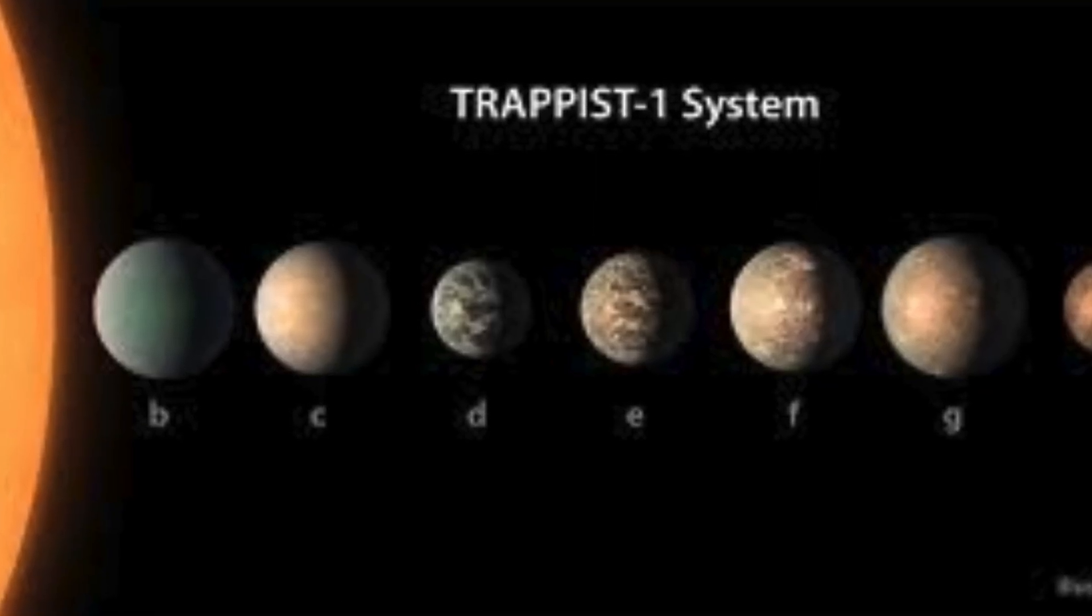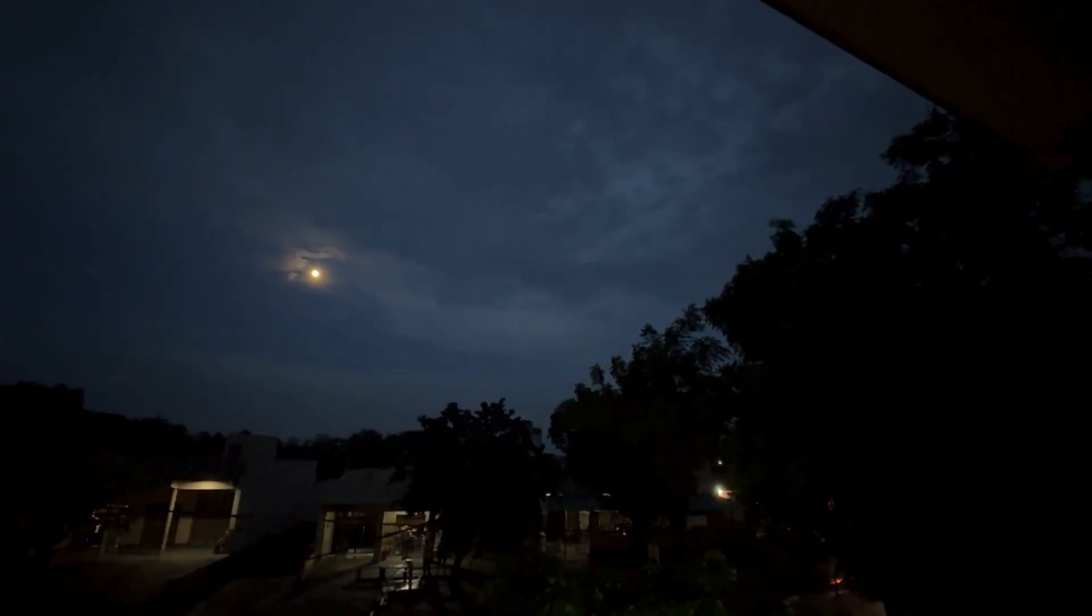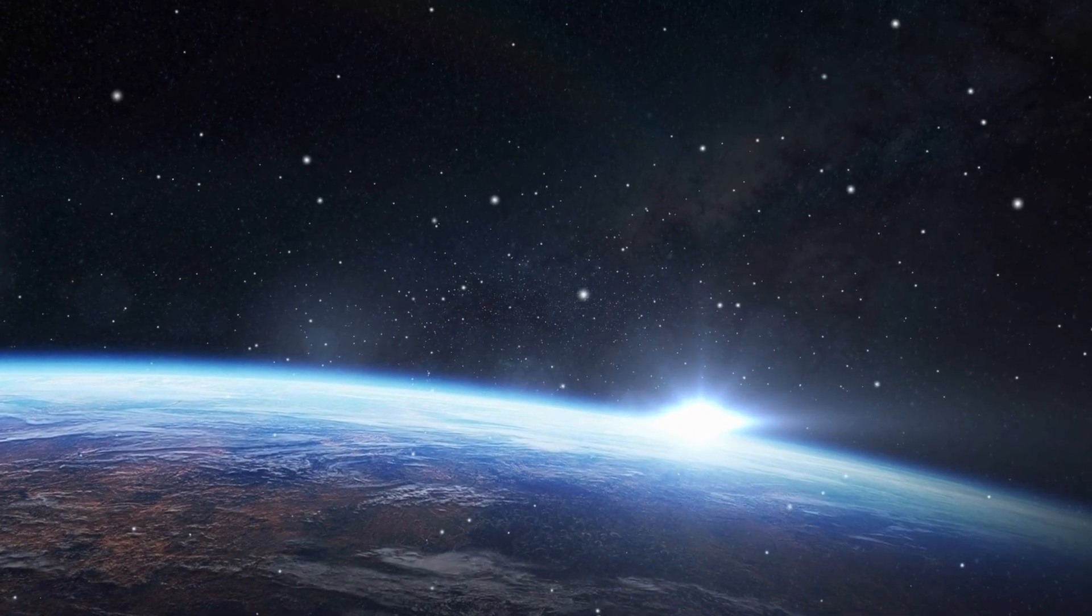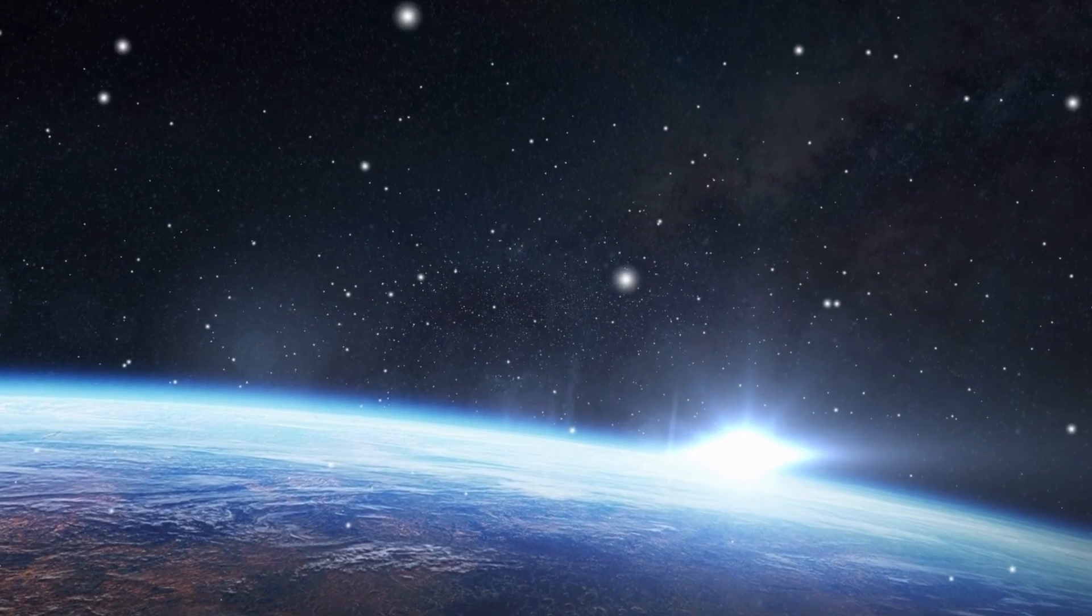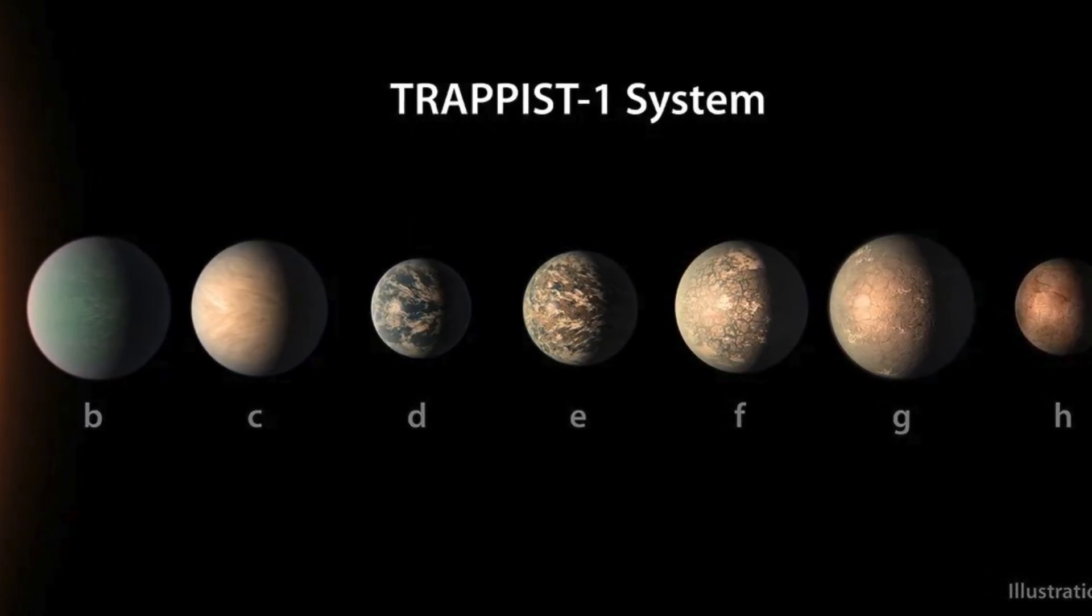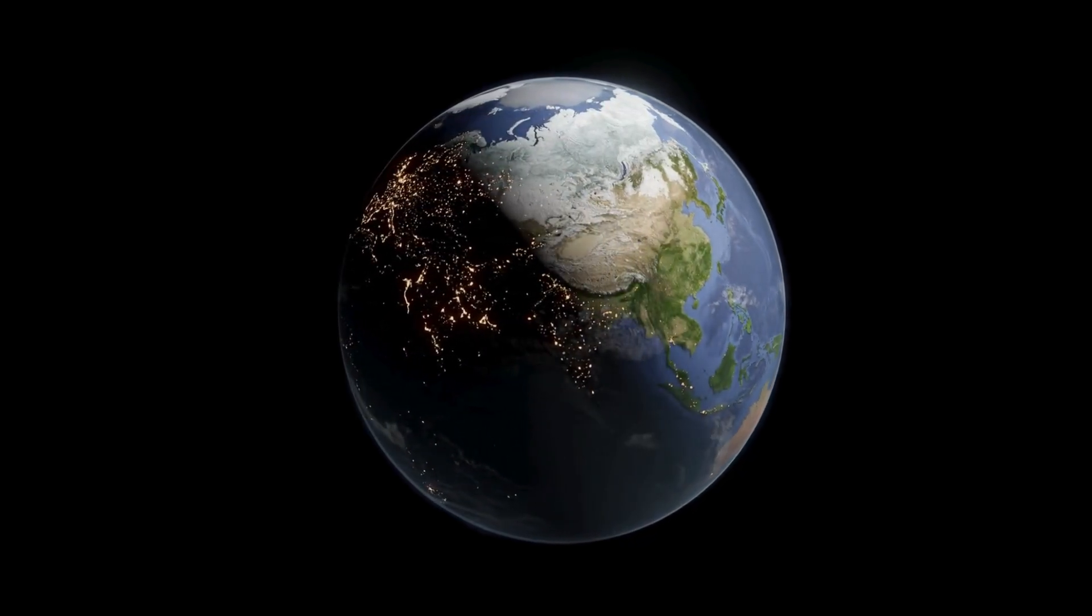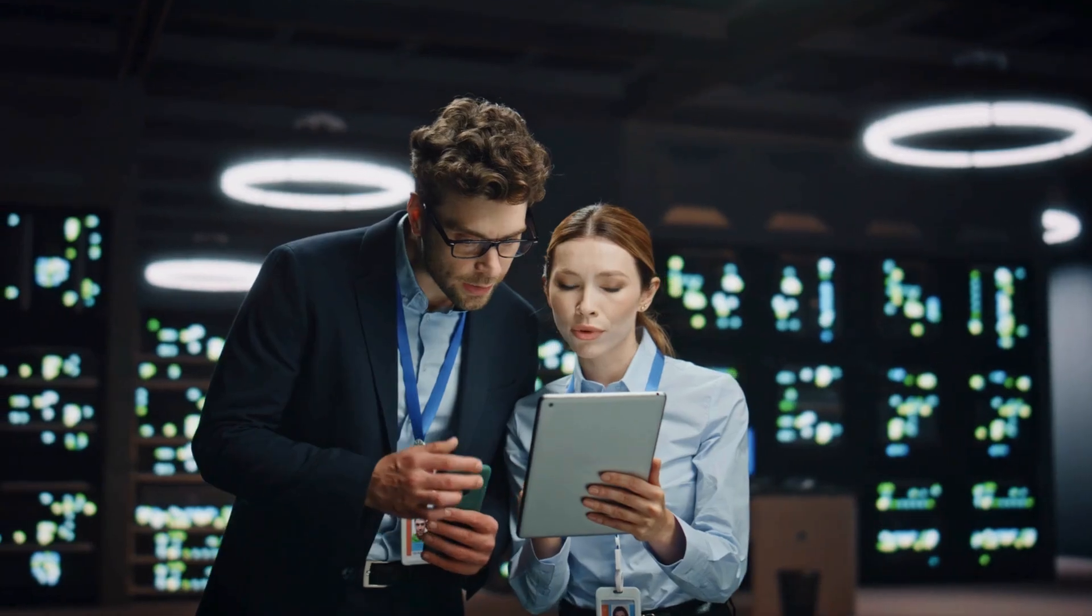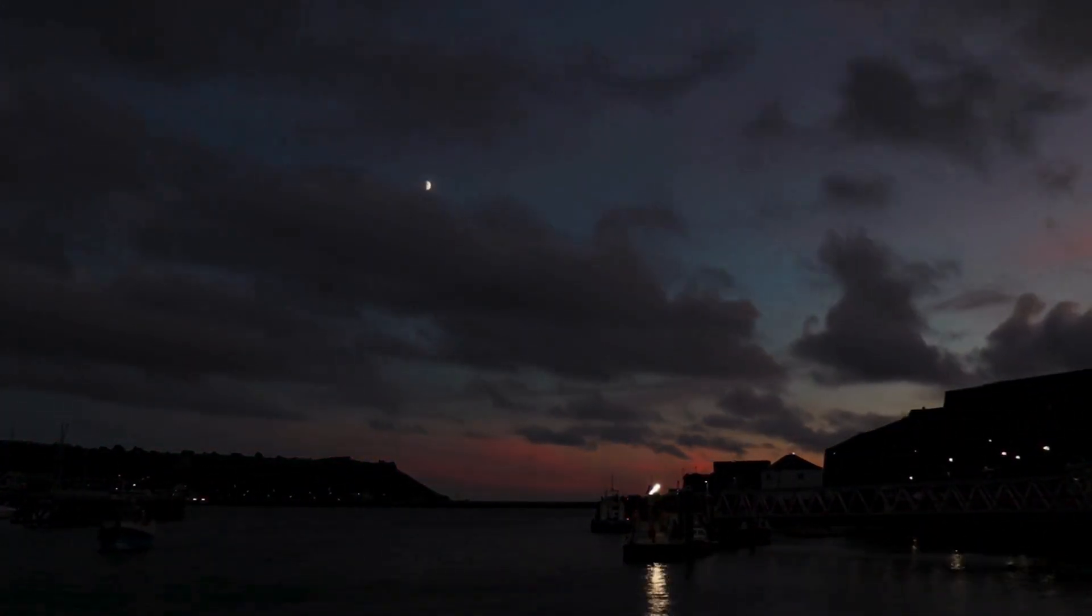It's been particularly effective for TRAPPIST-1. The data is 10 times more sensitive than for any other system. Why? Counter-intuitively, because the star is dim. A planet blocks a larger relative fraction of light from a small star than a bright one, making the signal easier to measure. Using these measurements, the team has already ruled out atmospheres for TRAPPIST-1c and d. But results from TRAPPIST-1e, a rocky planet about 0.9 times Earth's size, were intriguing. It appeared to have an atmosphere.